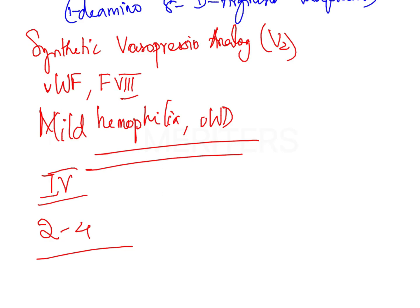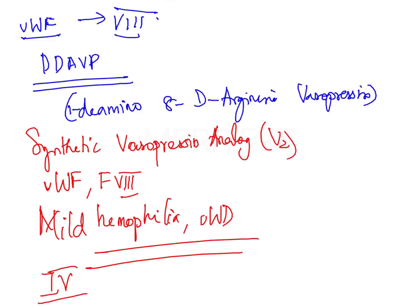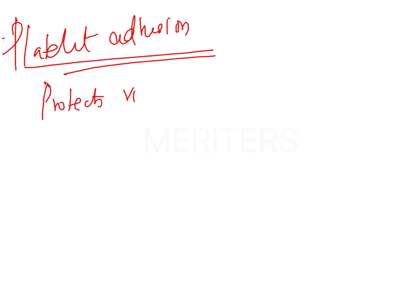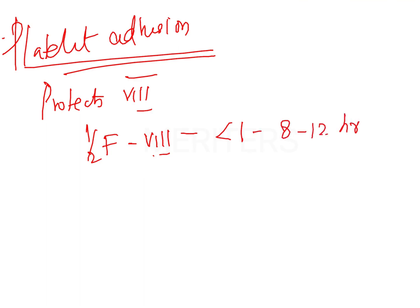The primary function of von Willebrand factor is primary hemostasis, which basically means platelet adhesion to the injured vessel wall. Secondary hemostasis involves stabilization of coagulation Factor VIII in the circulation — it protects circulating Factor VIII from degradation or inactivation. This increases the half-life of Factor VIII from approximately one hour to eight to twelve hours.